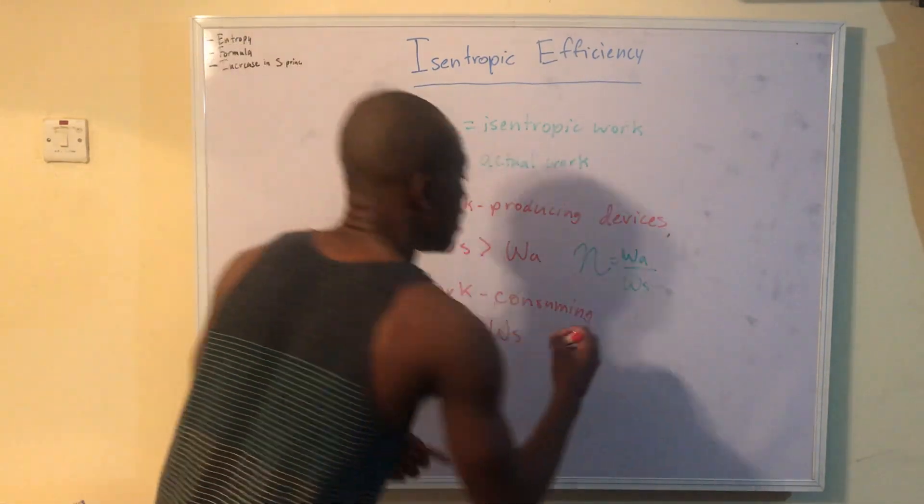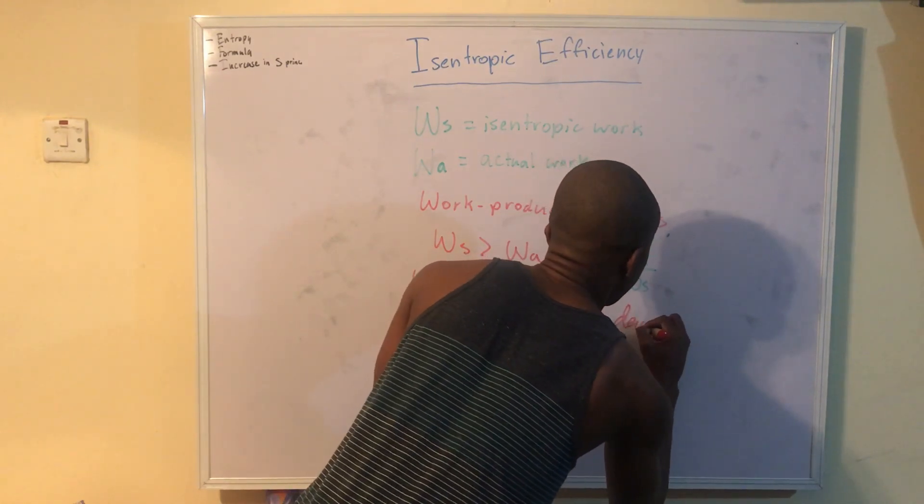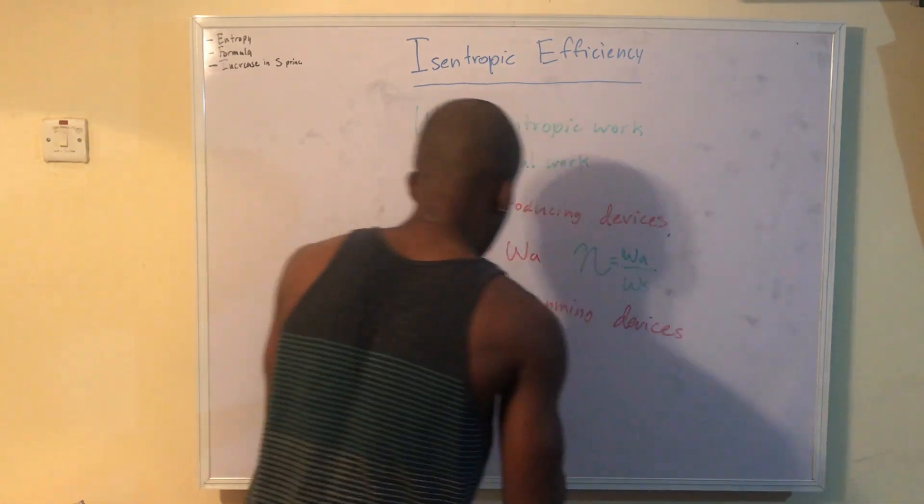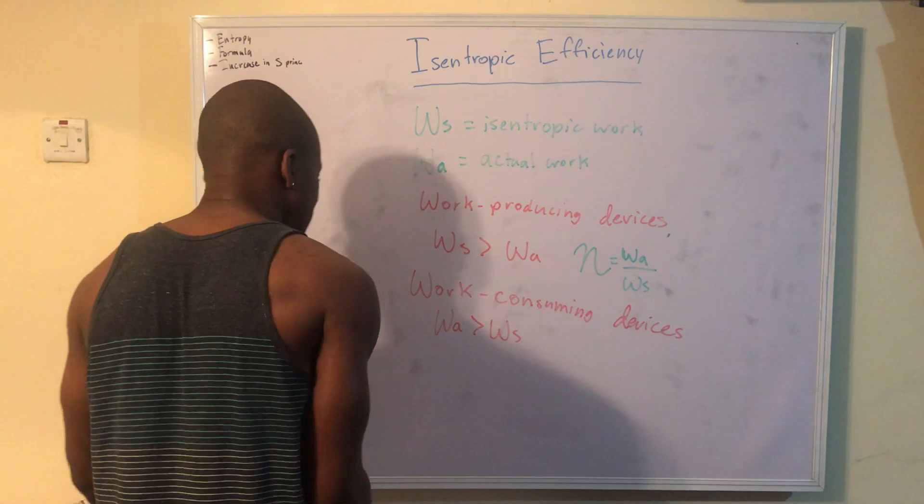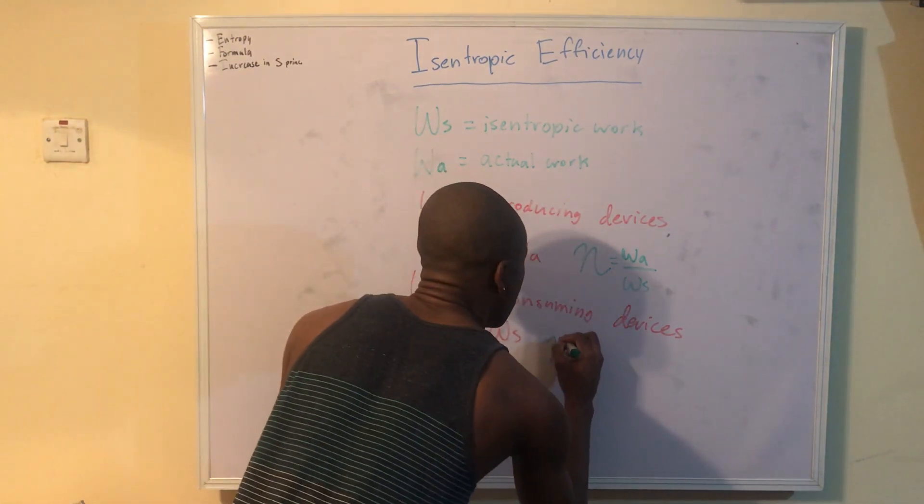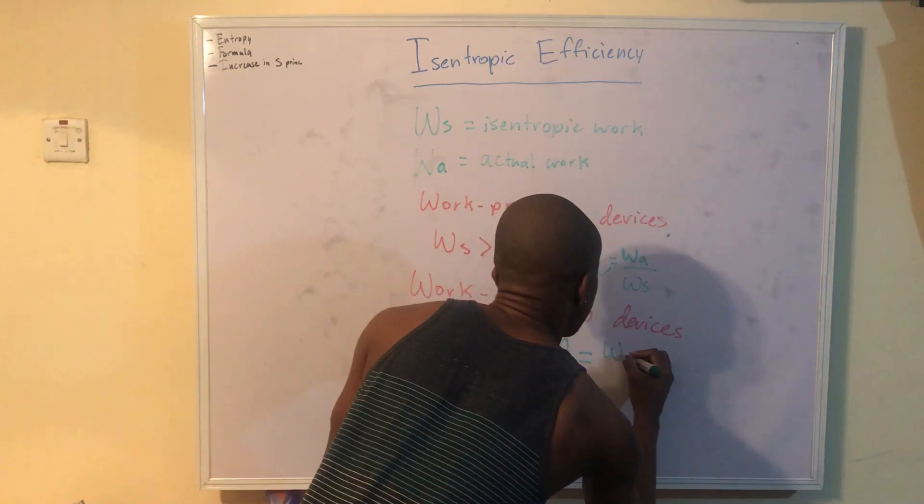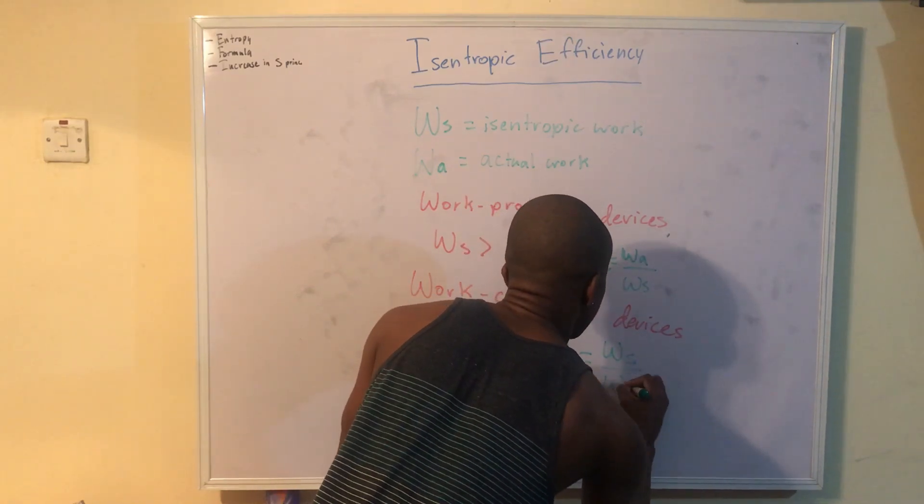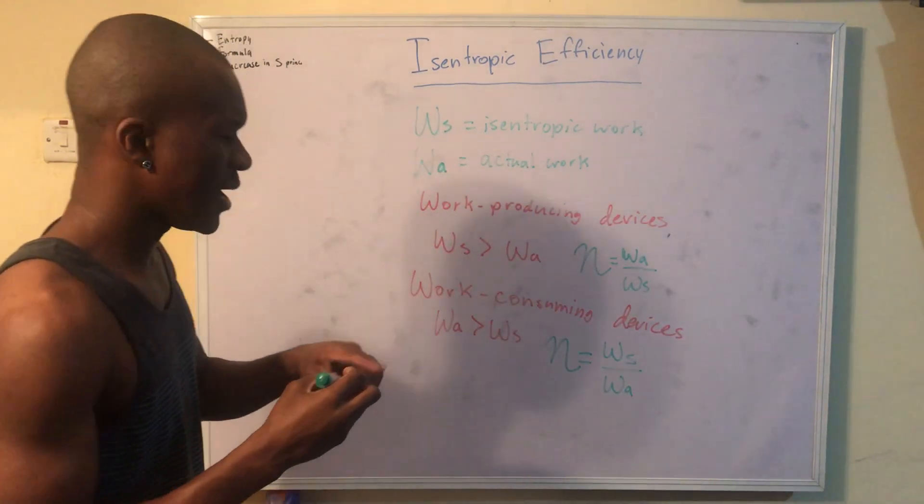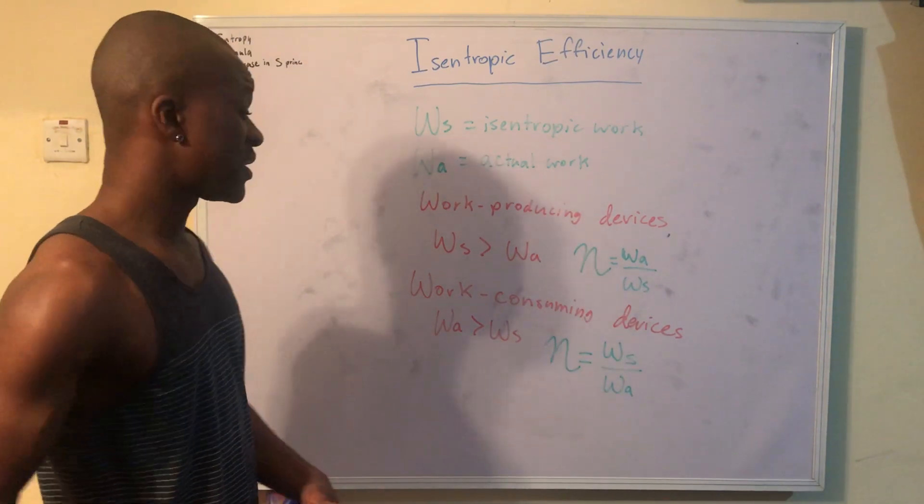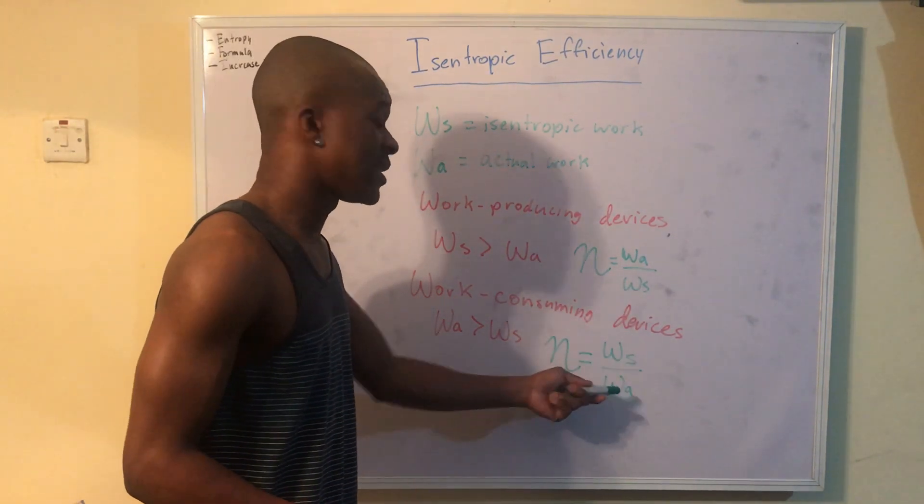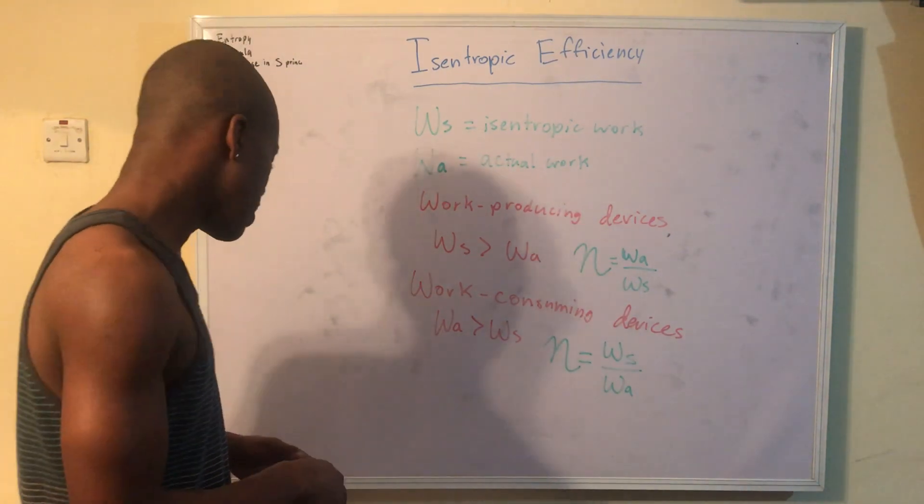Now, if we have a work-consuming device, our isentropic efficiency is going to be WS over WA. And that makes sense. Again, efficiency always has to be less than one. Here, this is less than this, so that's why we put it at the top.